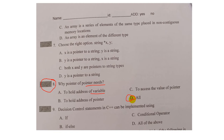So in this case, the answer is D - All. You can see: to hold the address of a variable, and to hold the address of a pointer. But looking more carefully, the answer is B - to hold the address of a pointer.